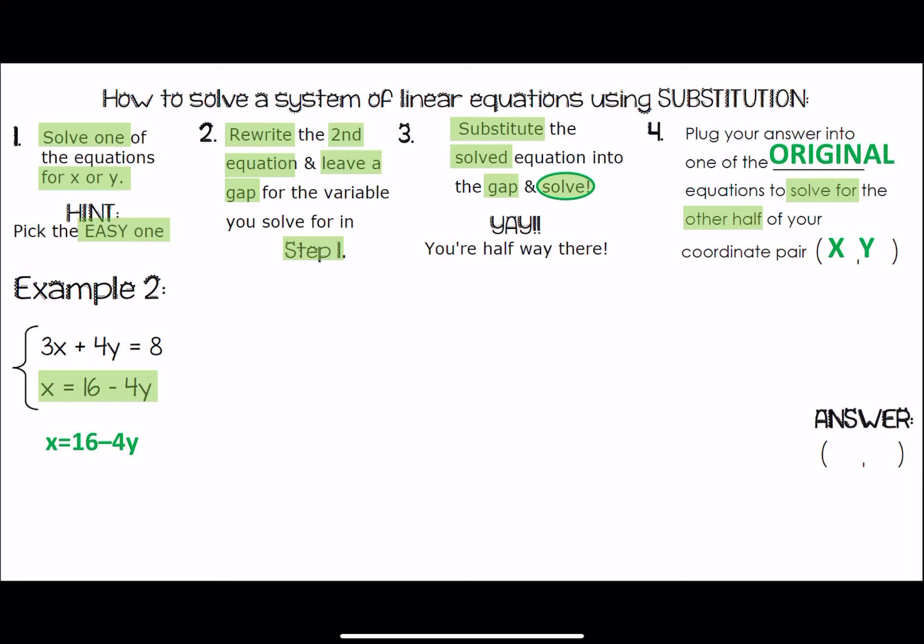And now, I'm going to rewrite the second equation right here. But, I'm going to leave a gap where this x is. And instead, what I'm also going to do, you'll notice I put these big set of parentheses. Because right there is where this part right here, what x is equal to, is going to get substituted in. So, you get 3 times 16 minus 4y plus 4y equals 8. Now, all you have to do is do everything we did in the first chapter. Don't call me after midnight. So, we're going to distribute. Combine our like terms.